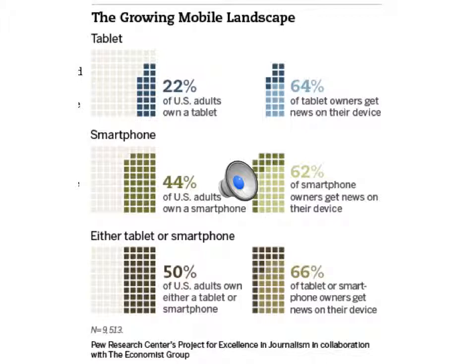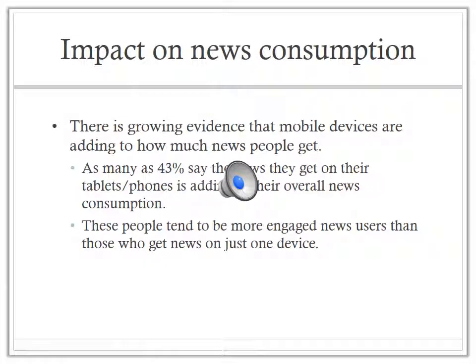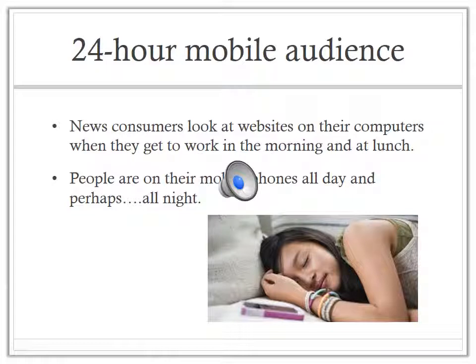About a quarter of US adults own a tablet device and about half own smartphones. This has major implications for how news will be consumed and how news is going to be paid for. People who get news from both their phones and their tablets tend to be more engaged news users when compared to people who access news from a single device. What media organizations are facing today is a 24-hour audience.